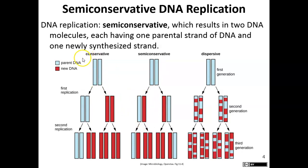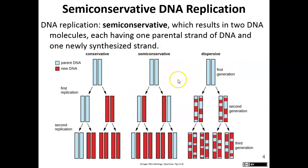The other two hypotheses at the time were conservative replication, where the parent strands would unwind and each would allow for the production of a daughter strand, then the daughter strands would bind together and the parent strands would bind together. And then there was dispersive, which is just really unusual. It was Matthew Meselson and Franklin Stahl who ran multiple experiments and determined replication to be semi-conservative.